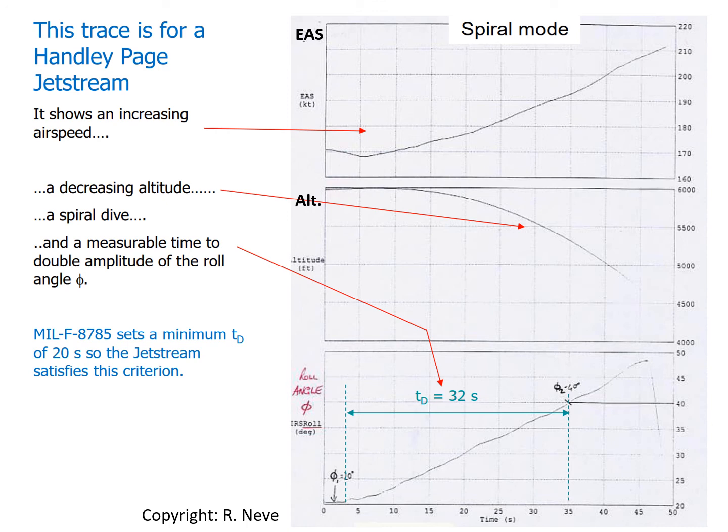In this class, we've discussed the roll damping and the spiral mode. We know both modes are non-oscillatory, and they are usually stable, but especially for the spiral mode, it can be slightly unstable, as long as the time to double amplitude is big enough, larger than the regulation.